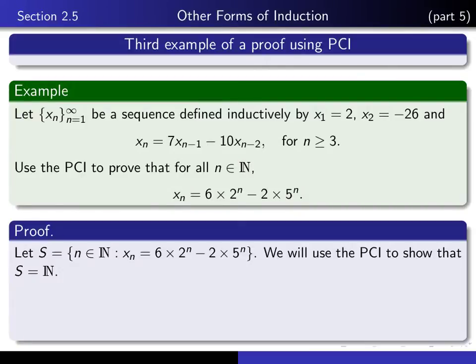Here's how I begin the proof. I introduce the appropriate set S. You'll notice there are two things going on: the recurrence definition, which you already know to be the case, and the closed-form formula, which is the thing you want to prove. So the closed-form statement is what you should write for your set S — S is the set of all n such that the thing you're trying to prove is true. We're going to use the principle of complete induction to show that S equals all of the natural numbers.